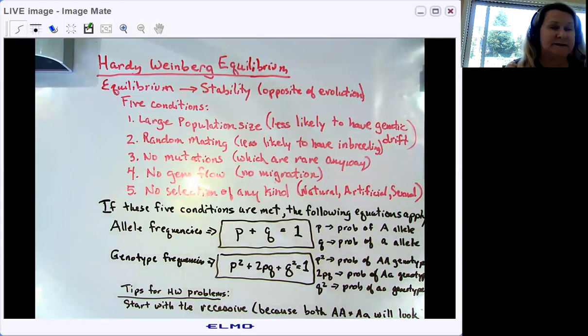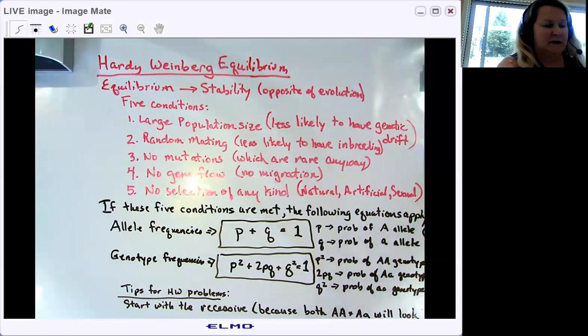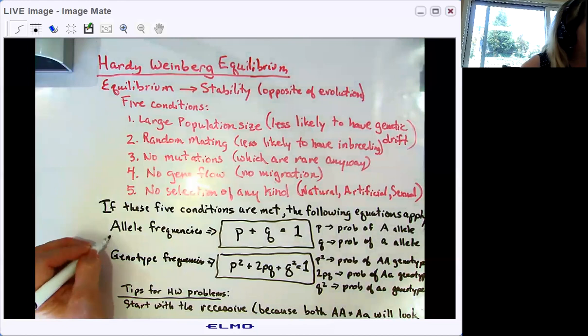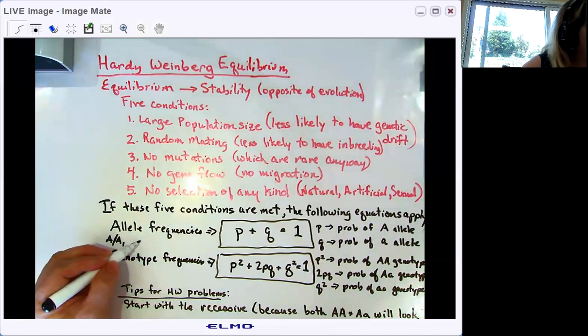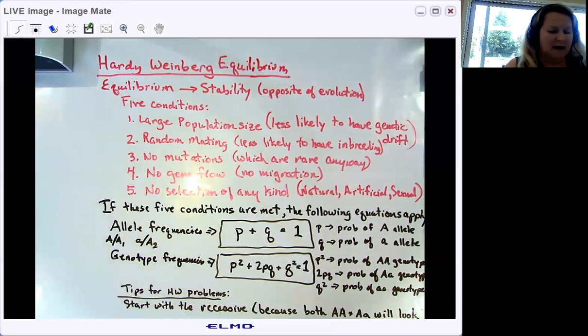In college textbooks, they often represent the frequency of the dominant allele as A1 instead of big A. Q represents the probability of the recessive allele, which is little a. In the pop gen simulation, the frequency of the recessive allele is represented as A2. Sometimes in college books, they use A1 and A2 instead of big A and little a, because not all genes behave in straight dominant and recessive order. But for our purposes, let's just use big A and little a.